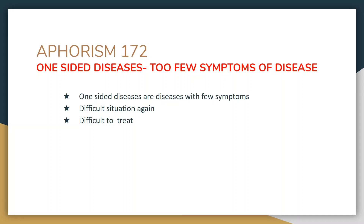Hello students. We begin our discussion on aphorism number 172, which starts with the discussion on one-sided diseases. What are one-sided diseases? They are diseases with too few symptoms. The patient presents with one or two principal symptoms. One-sided diseases are difficult for the physician to treat because of the presence of too few symptoms. Symptoms are the only pointers for the selection of a remedy.